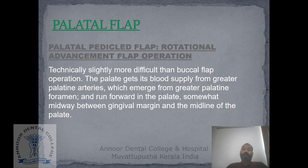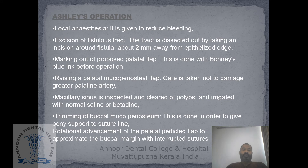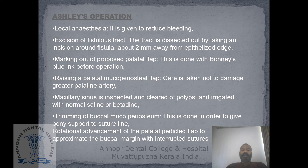You can also opt for a palatal flap. The palate gets its blood supply from the greater palatine arteries, which emerge from the greater palatine foramen and run midway between the gingival margin and the palate midline. You start with anesthesia, mark the palatal flap with methylene blue ink before operation, raise the palatal mucoperiosteal flap taking care not to damage the greater palatine artery, inspect the maxillary sinus, trim the buccal mucoperiosteum, and do a rotation advancement of the palatal pedicle to approximate to the buccal margin with interrupted sutures.